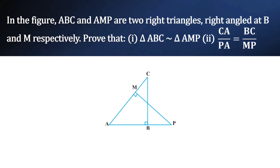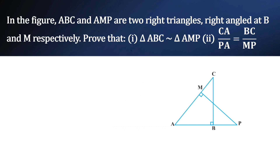Now we are given two triangles: triangle ABC and triangle AMP. ABC is right angled at B, so this angle is 90 degrees, and triangle AMP is right angled at M. Now let us prove that triangle ABC is similar to triangle AMP.